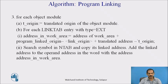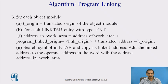For each object module, t_origin equals translated origin of the object module. For each link table entry with type external reference, the address in the work area is assigned as: work area address plus program linked origin minus linked origin plus translated address minus t_origin. We search for the symbol in the name table, copy its linked address, and add the linked address to the operand address in the word at that workspace address.